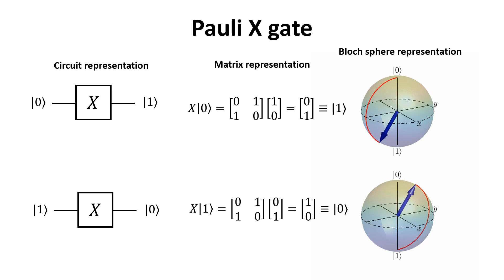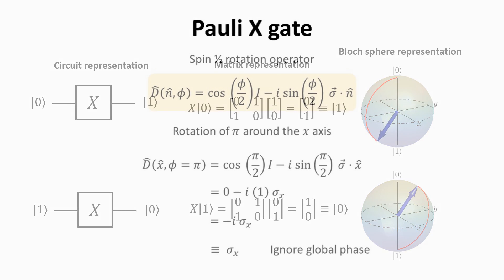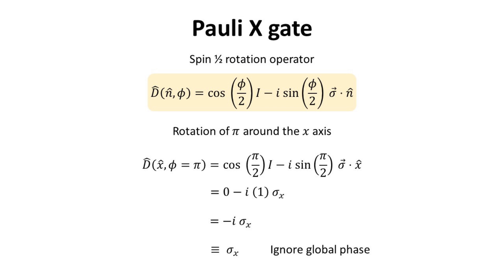In the Bloch sphere representation, we see that the X gate simply maps the initial qubit state onto the opposite pole, say from zero ket to one ket and vice versa. In the Bloch sphere illustration, we see that the action of the X gate is represented by a rotation of pi with respect to the X axis. This is not an arbitrary choice. Using the definition of the rotation operator for spin one-half systems, we can show that the X gate is exactly the same as the rotation of pi with respect to the X axis.